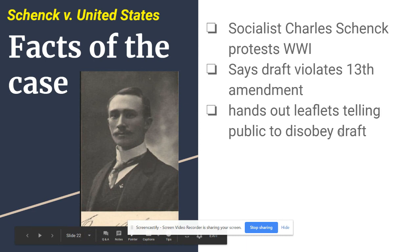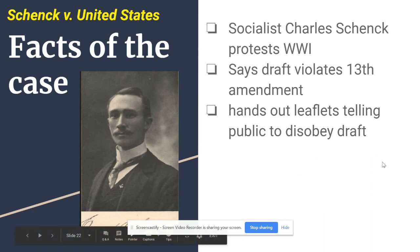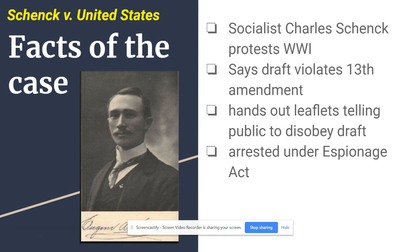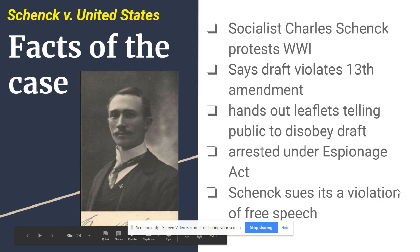Schenck ends up handing out leaflets — little pamphlets — telling the public to disobey the draft. He's walking around in public areas handing out these leaflets saying don't join the draft, disobey it, which is punishable by prison sentence. He's arrested under a law called the Espionage Act, which is basically almost accusing you of treason. Schenck then sues, arguing that the Espionage Act is a violation of his free speech and that he has a right to hand out leaflets telling the public to disobey the draft.